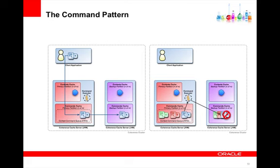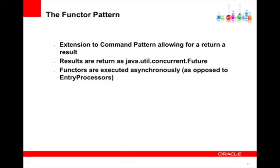This slide outlines the flow of how commands are executed in the command pattern. When a client submits a command, it's first routed through the context cache where it's given a unique order in which to execute. From there, it's routed to the command's cache for execution. As you can see in the diagram, the command is also backed up by Coherence. The functor pattern is an extension to the command pattern that allows for the returning of a result in the form of a future. Functors are also executed asynchronously in the grid, and results are returned in the form of a JavaUtil concurrent future.